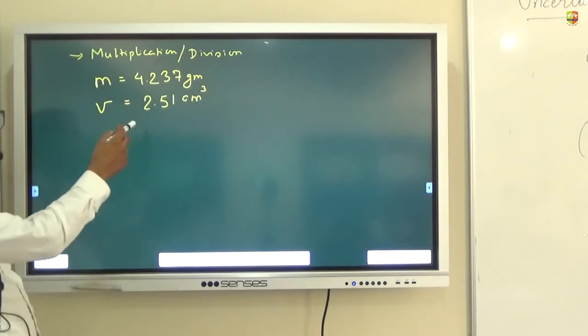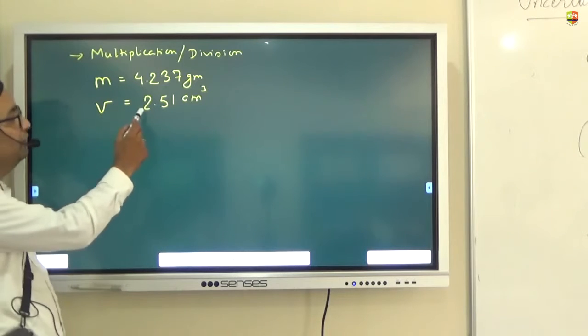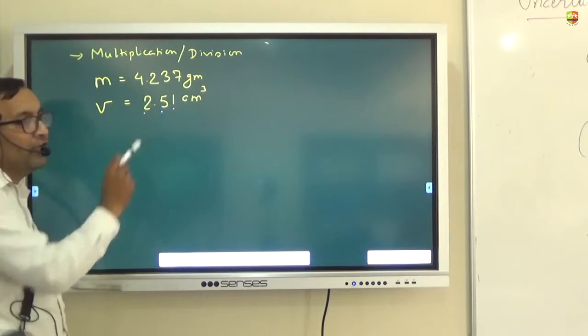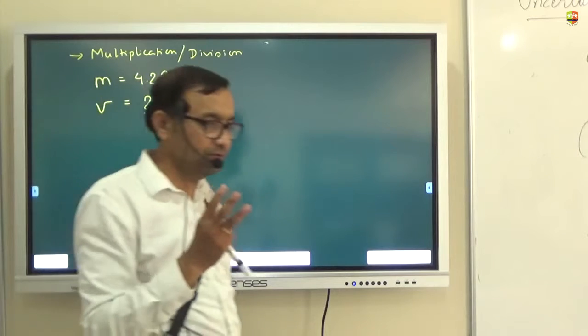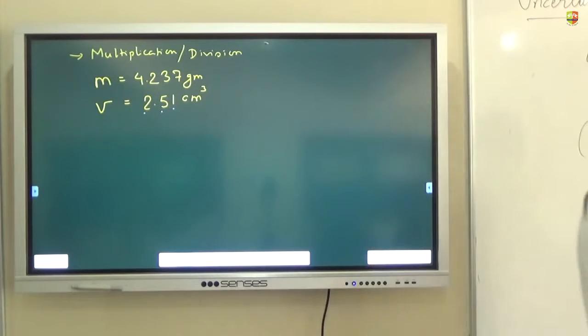What is the least number of significant figures? 3. So your answer should have 3 significant figures. So what is the answer? 1.68.